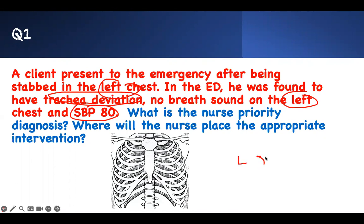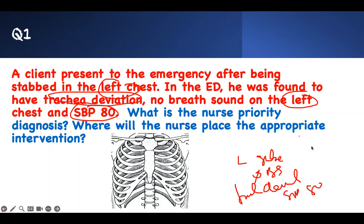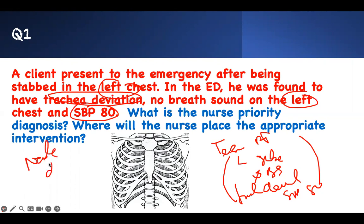The patient has no breath sound, tracheal deviation, and a systolic blood pressure of 80 after a left chest stab. These are signs of tension pneumothorax. Air goes in, pushes the trachea away, and systolic pressure is low. The treatment is needle decompression.